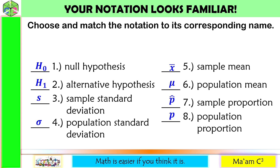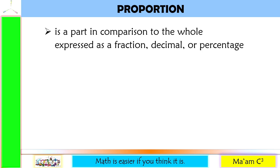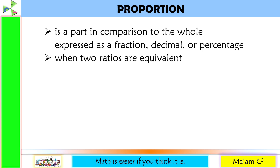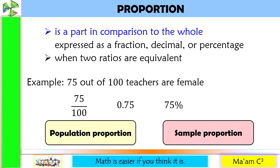In this lesson, we are going to talk about proportion. It is defined as a part in comparison to the whole. It may be expressed as fraction, decimal, or percentage. For example, 75 out of 100 teachers are female. We can express this as a fraction: 75 over 100; as a decimal: 0.75; and as a percentage: 75%. We are going to talk about population proportion and sample proportion, which will be further discussed in our next lesson.